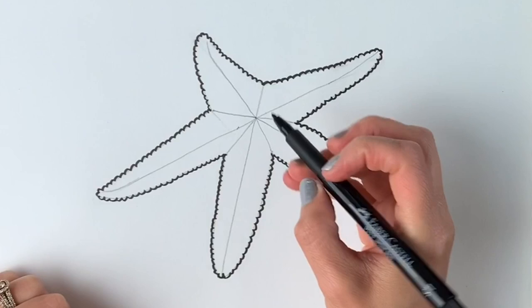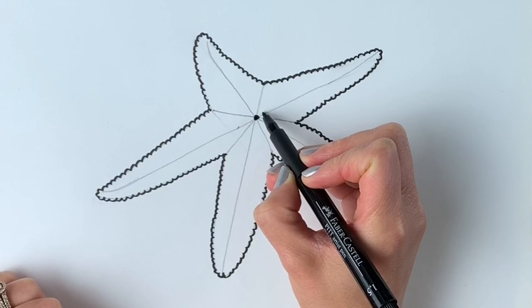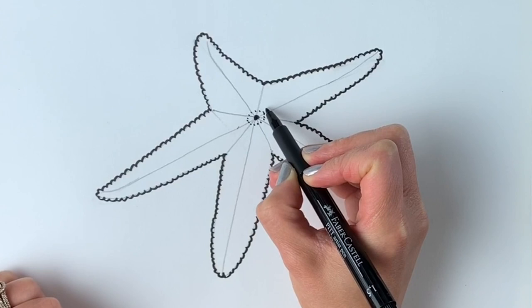And then using lots of little dots we're just going to draw a ring around that dot. Just like that. It's more like an oval shape.